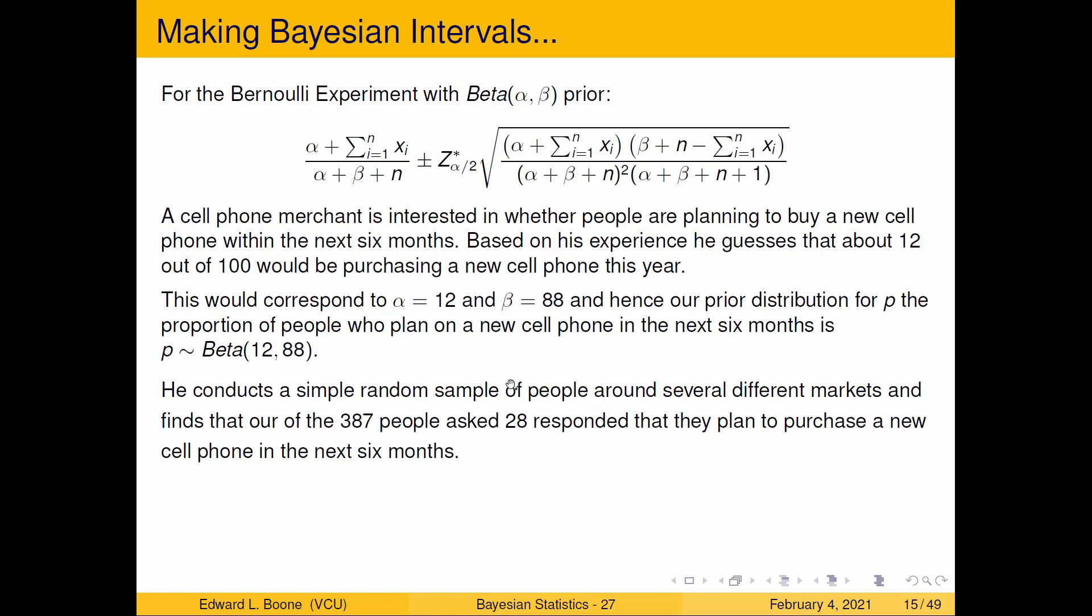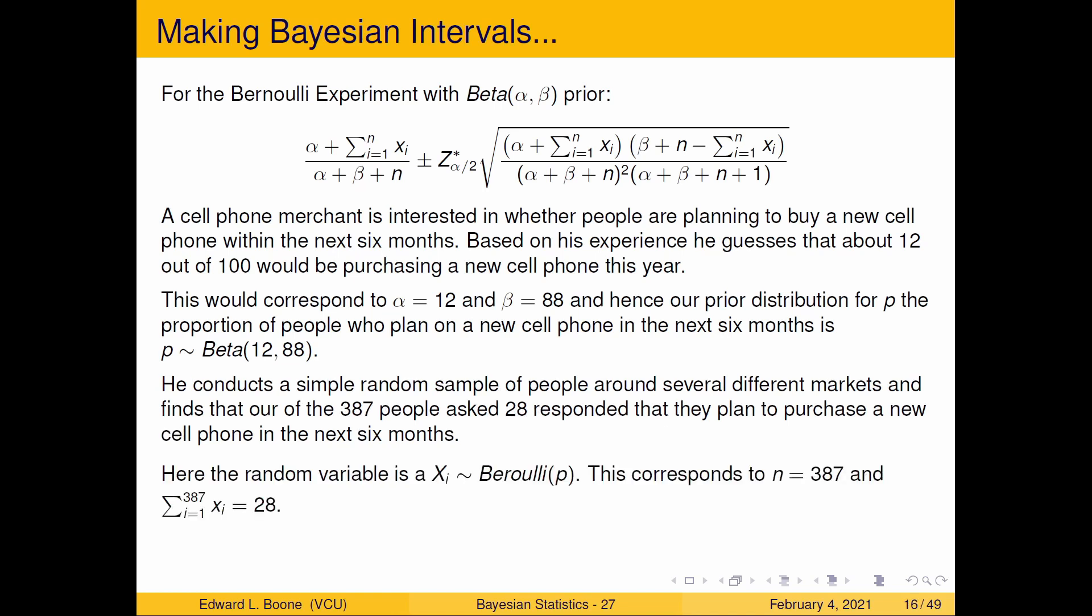So then he goes out and conducts a simple random sample of people around several markets where he's at and he finds out that out of 387 people that he asked, 28 said that they plan on purchasing a new cell phone in the next six months. So here's what we have, we have our random variable is Bernoulli. If you think about it are you going to buy it yes or no, that's it. If they said yes that is a clear intention to buy. They say I don't know, I would not exclaim that would be a clear intention to buy. So this corresponds to n = 387 and our sum of the xi are already given because he already added them up, 28 of them said yes.